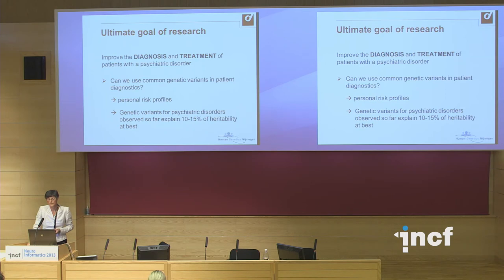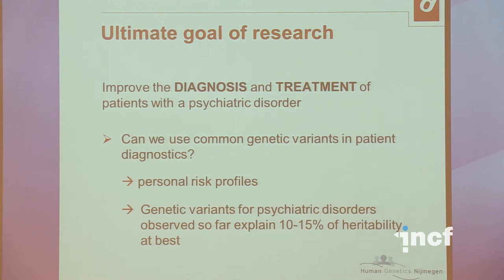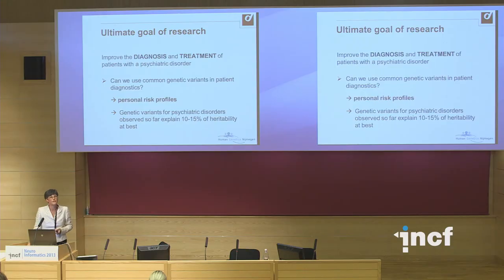Can we use this information to improve diagnostics for patients with psychiatric disorders? We know we can use these data to make personal risk profiles, but we need much more genetic information and the ability to distinguish between disorders. Even with 100 independent hits, we can only explain 10–15% of the heritability of a disorder like schizophrenia. More research is required, but using genetics in the clinic remains our ultimate goal.